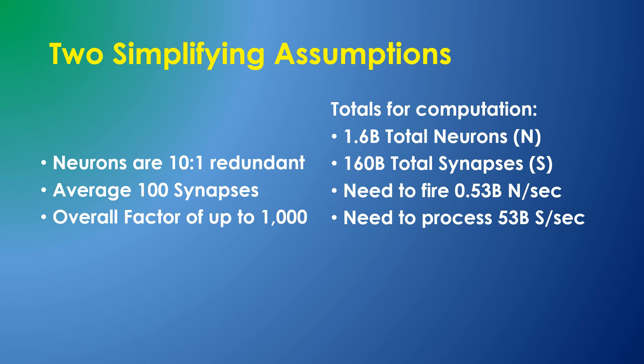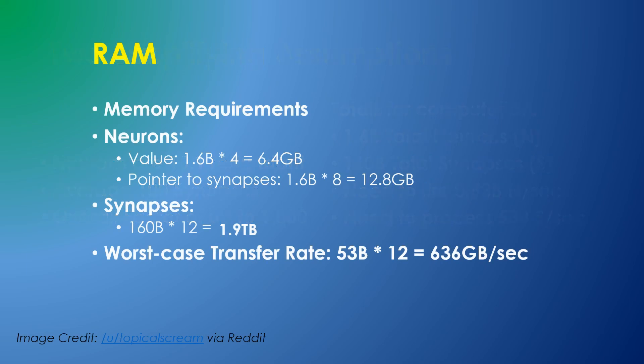So what kind of computer do we need? We'll need to be able to process 53 billion synapses per second. First, let's look at RAM. Just to store the synapse data, we'll need 1.9 terabytes of RAM. What does this quantity of RAM look like today?